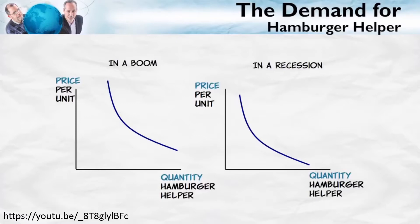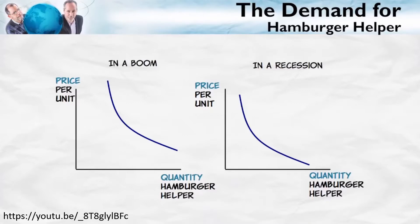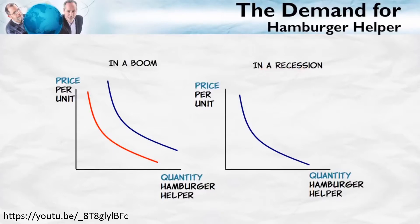Let's test your knowledge. Think about the demand for hamburger helper in two different situations: during a boom and during a recession. When the economy goes into a boom and people's incomes go up, the demand for hamburger helper is going to decrease, because hamburger helper is an inferior good — so we get a decrease in demand. In a recession, when incomes are going down, the demand for hamburger helper is going up.